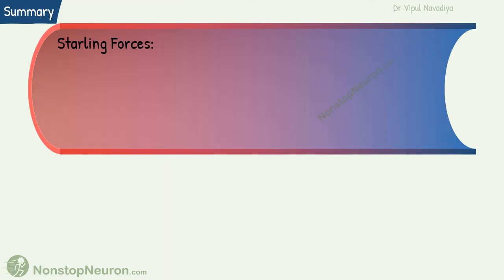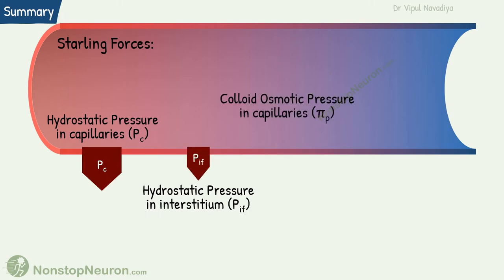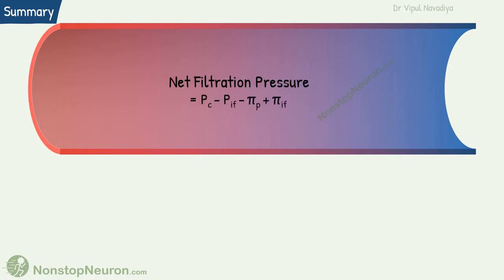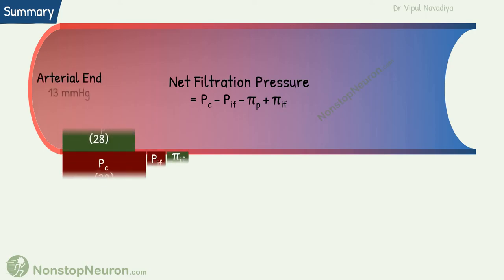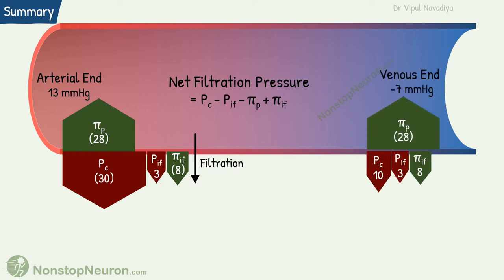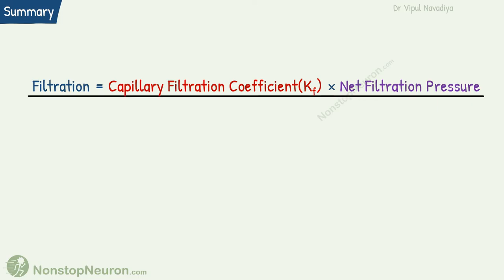Let's have a quick summary. Starling forces include: hydrostatic pressure in the capillary, which favors filtration; hydrostatic pressure in the interstitium, which being negative also favors filtration; colloid osmotic pressure in the capillary, which favors reabsorption; and colloid osmotic pressure in the interstitium, which favors filtration. Net filtration pressure is the sum of all these forces — at the arterial end it is 13 mmHg causing net fluid filtration, and at the venous end it is –7 mmHg causing net reabsorption. Capillary filtration coefficient is a measure of the capacity of the capillary to filter water. Finally, filtration equals capillary filtration coefficient multiplied by net filtration pressure.